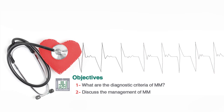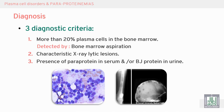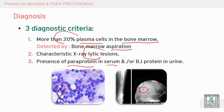Today we will continue discussing the diagnosis of plasma cell disorders. To diagnose plasma cell disorders we should have three diagnostic criteria. First criteria: more than 20% plasma cells in the bone marrow aspiration. Second criteria: to find lytic lesions in X-ray. Third criteria: to find paraprotein in the serum or Bence Jones protein in the urine by serum protein electrophoresis.